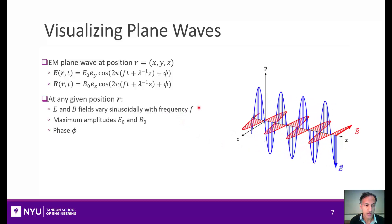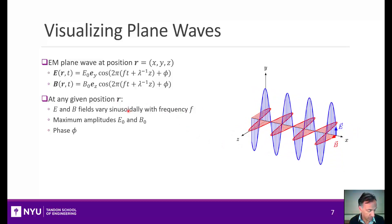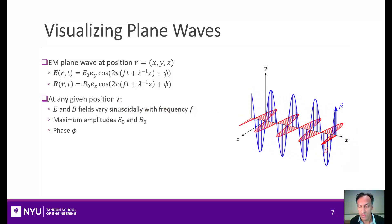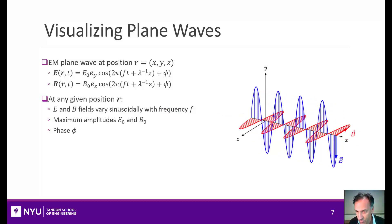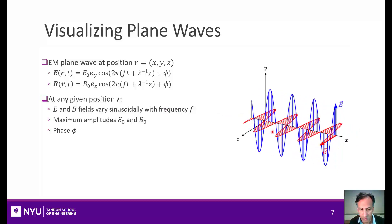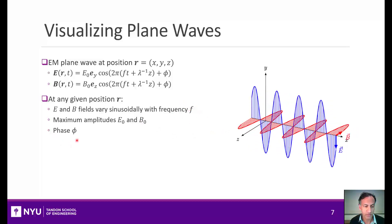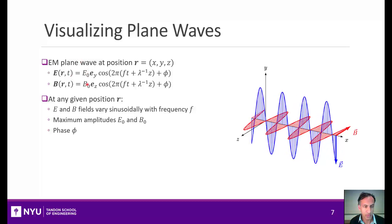There's two ways to think about this. At any position R, if you fix the position, the electromagnetic fields vary sinusoidally with the frequency. So if I fix the position, it keeps on going up and down like this. And it will have some frequency F and some phase, and then it will also have some maximum amplitudes.